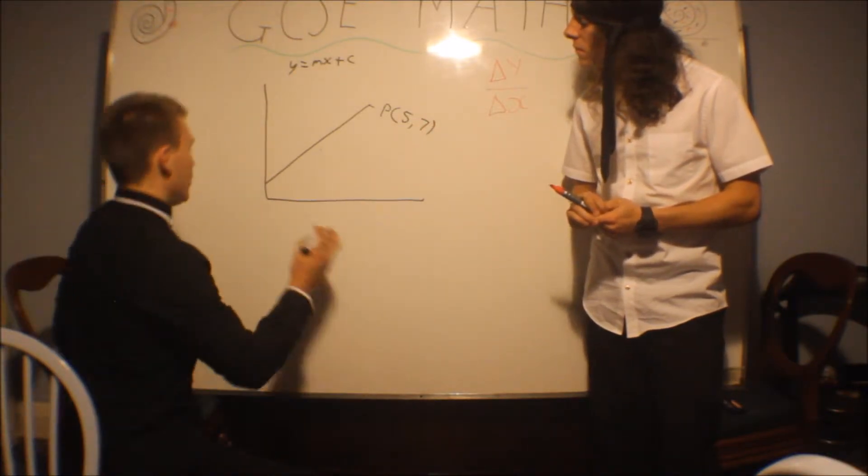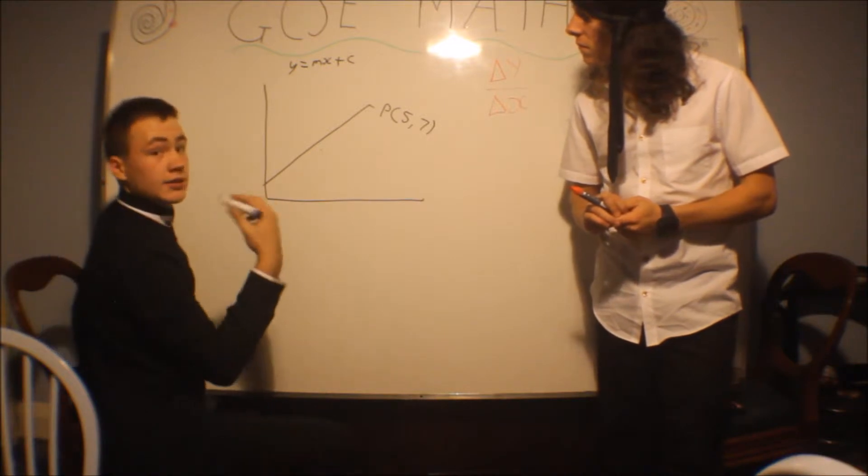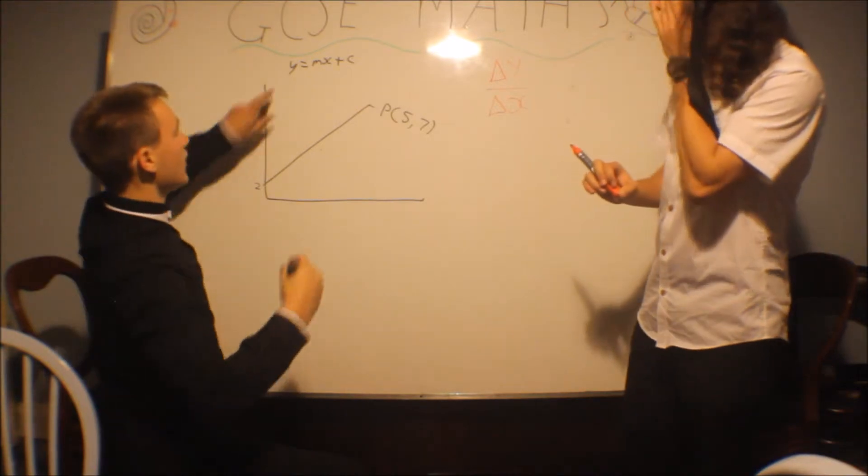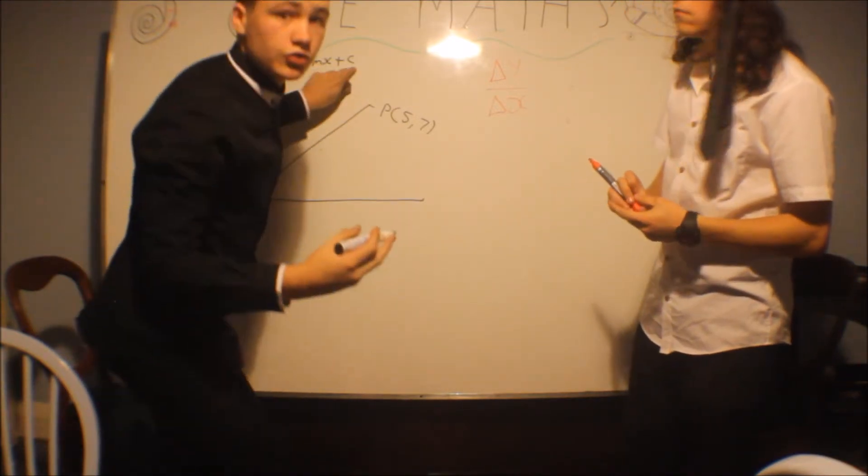And here, the point where it goes through here is, say, 2. It goes through the y-axis at 2. Work out the equation of the straight line.